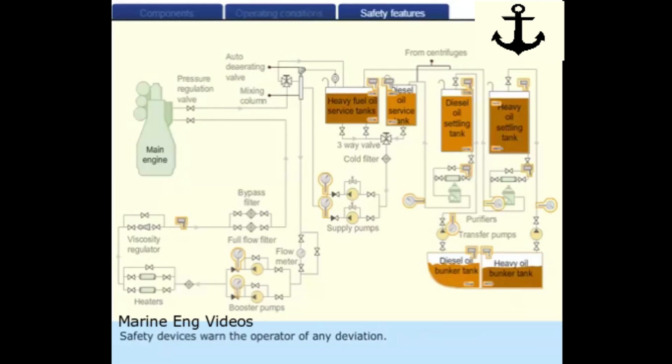Safety devices warn the operator of any deviation. The highlighted devices of the system act as frontline safety provisions which trigger the actual safety alarms, shutdowns, or isolations. Temperature transmitters, pressure transmitters, level transmitters also provide first level of protection against system breakdowns.